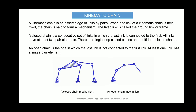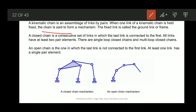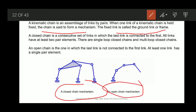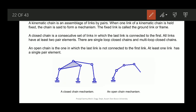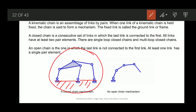A kinematic chain is an assembly of links connected by pairs. When one link of a kinematic chain is held fixed, it constitutes a mechanism — that fixed link becomes the fixed link, ground link, or frame. We can also have closed-chain mechanisms or open-chain mechanisms. The four-bar linkage shown here is a closed chain. Industrial robots and robotic arms are examples of open-chain mechanisms.